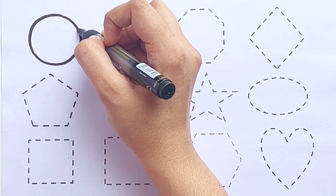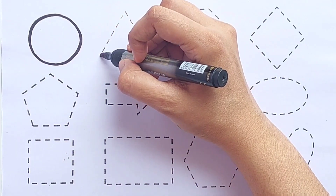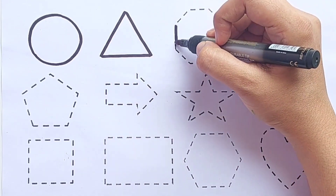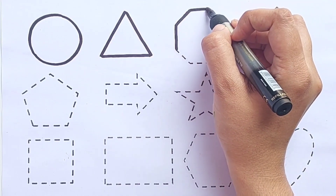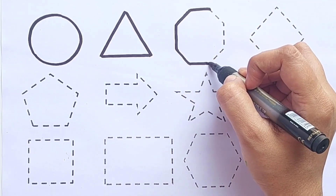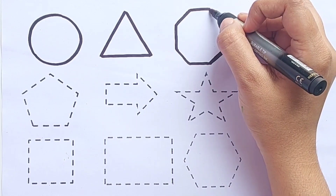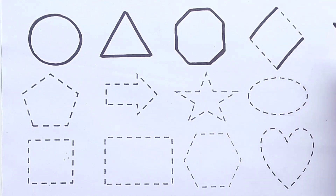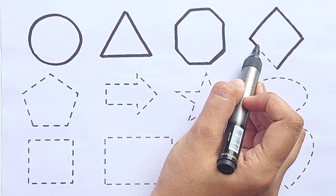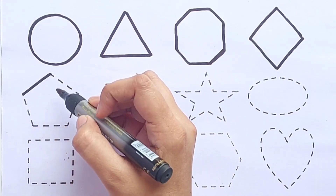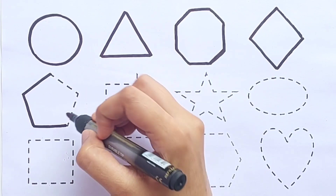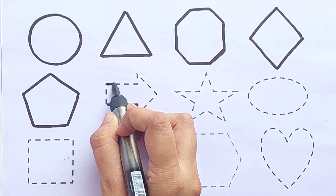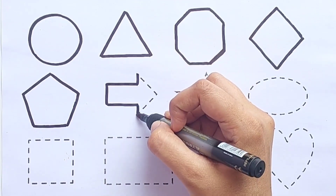Circle. Triangle. Octagon. Diamond. Pentagon. Arrow.